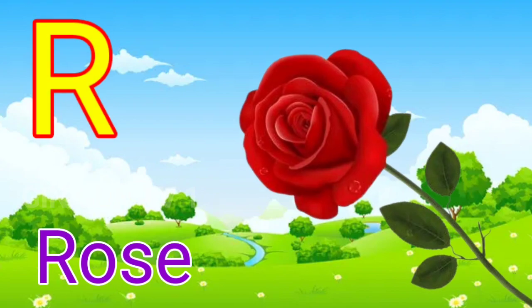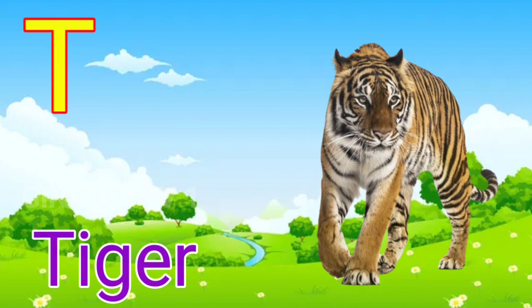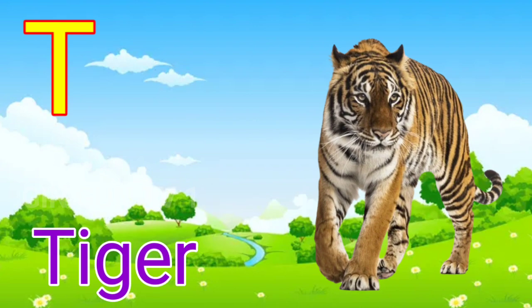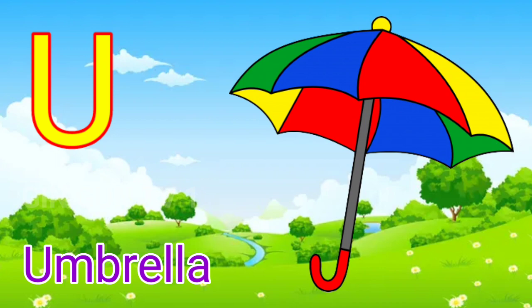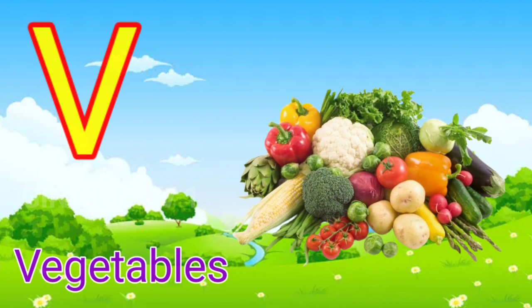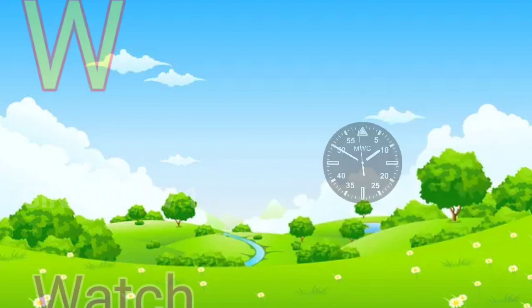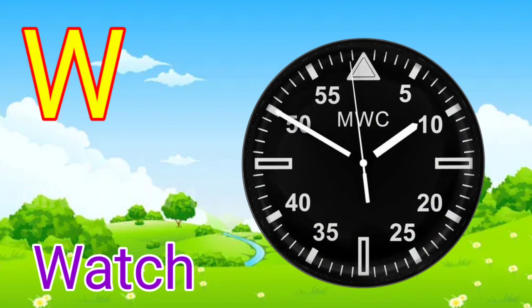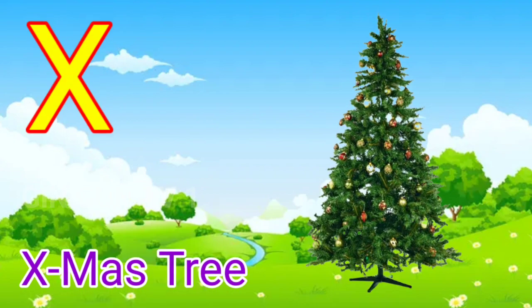S for sheep, sheep miss jahaj. T for tiger, tiger miss bug. U for umbrella, umbrella miss chata. V for vegetables, vegetables miss sabjia. W for vase, vase miss gadi. X for x-mas tree, x-mas tree for x-mas tree.